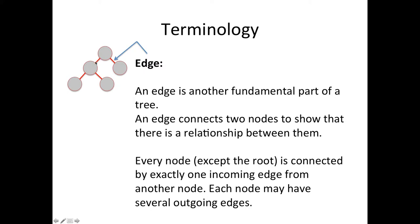And a lot of times you'll see trees drawn with these as little arrows. Every node except the root is connected to exactly one incoming edge from another node. So if you look at any node in the tree there will only be one line coming to it from above. But there may be multiple lines coming out of it below.